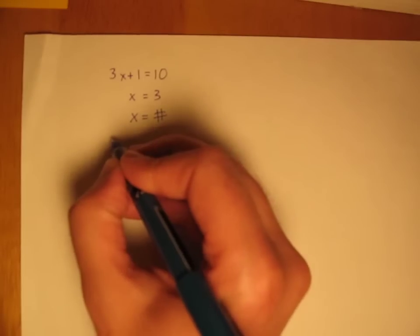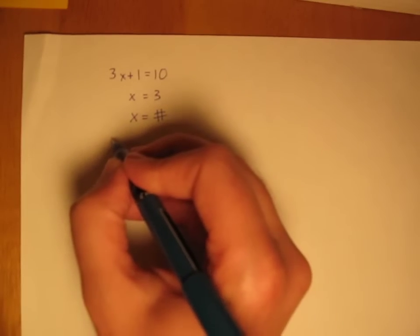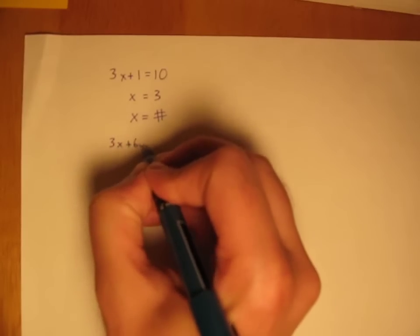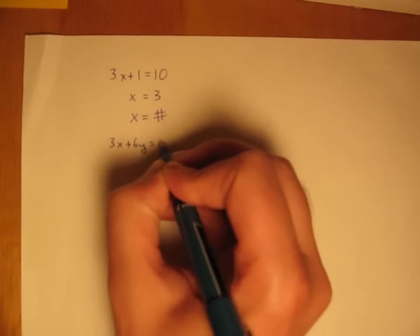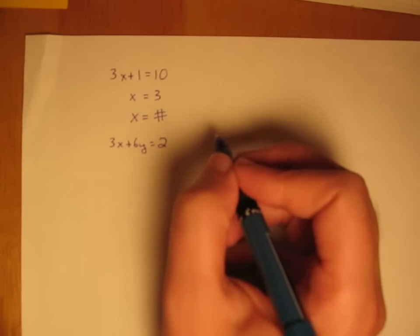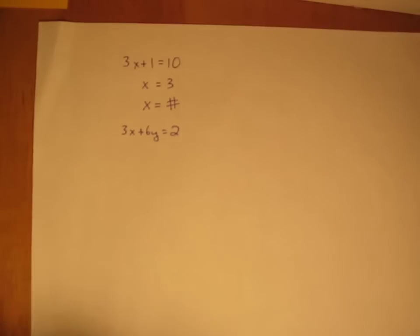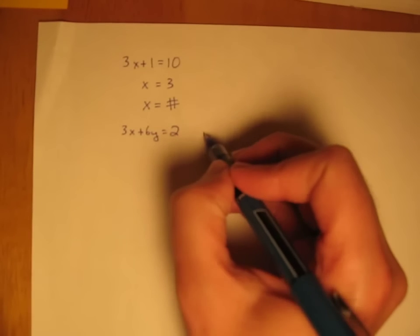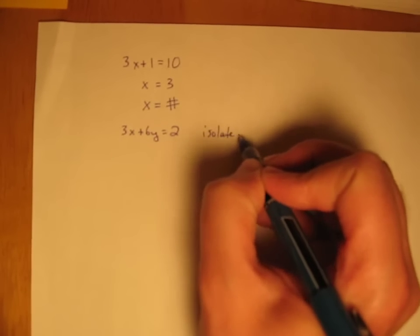This happens whenever there's more than one kind of variable or more than one variable in a given equation. So if we have 3x plus 6y equals 2, here we don't know what x and y are. There are actually lots of different things that x and y could be to satisfy this equation, but the goal at the moment is just to isolate y.